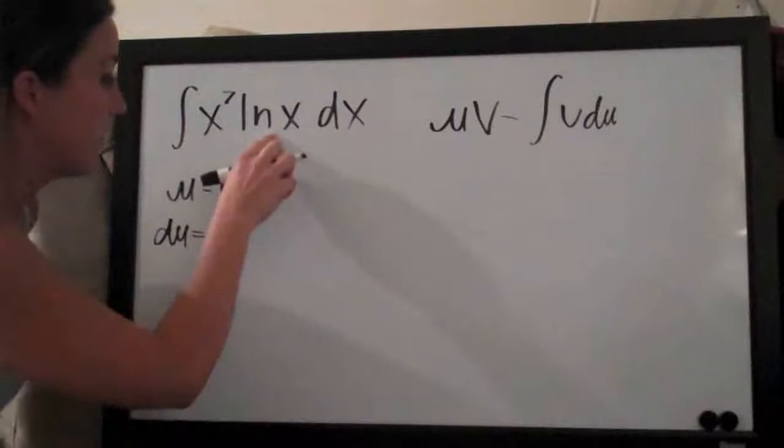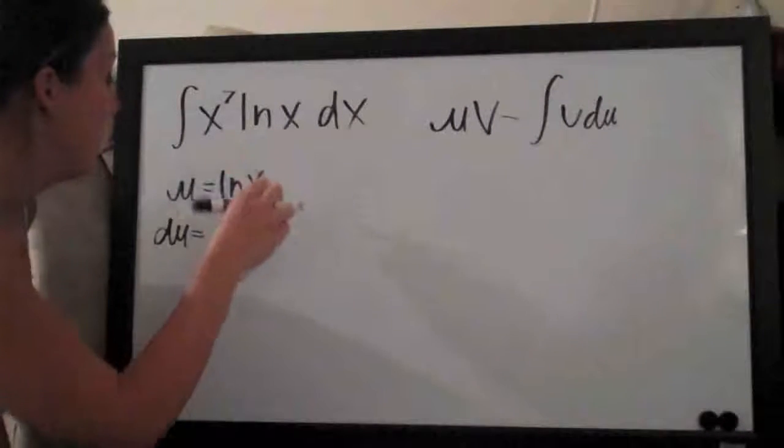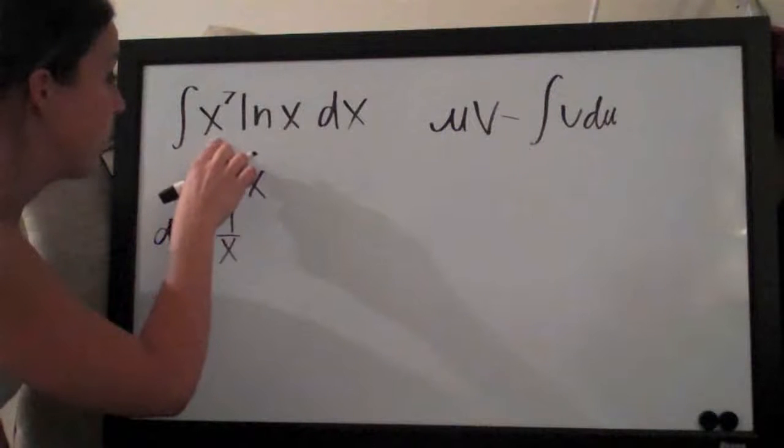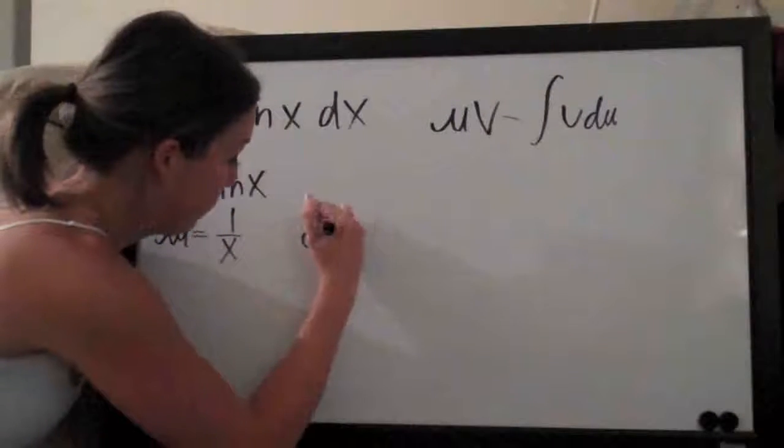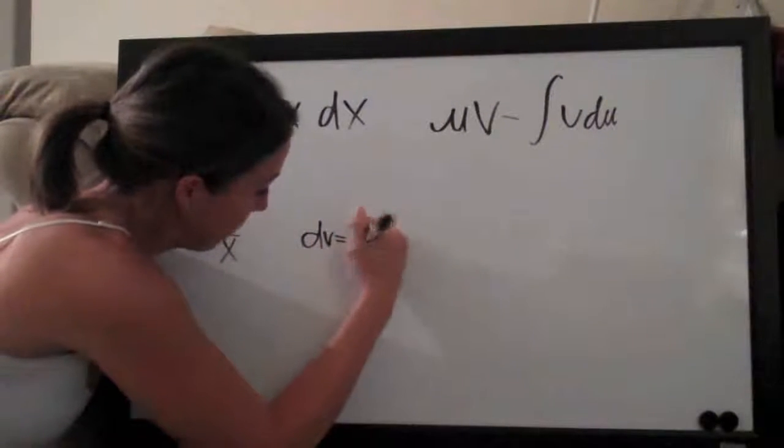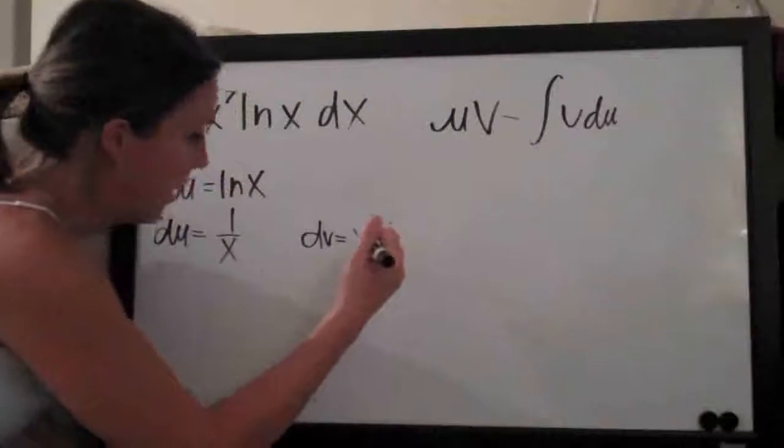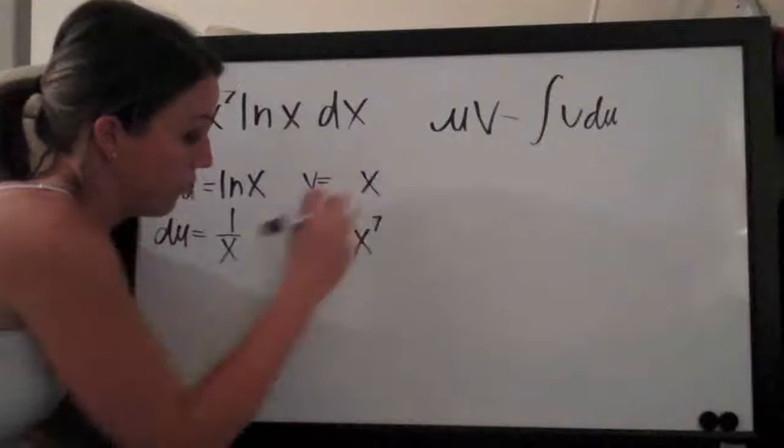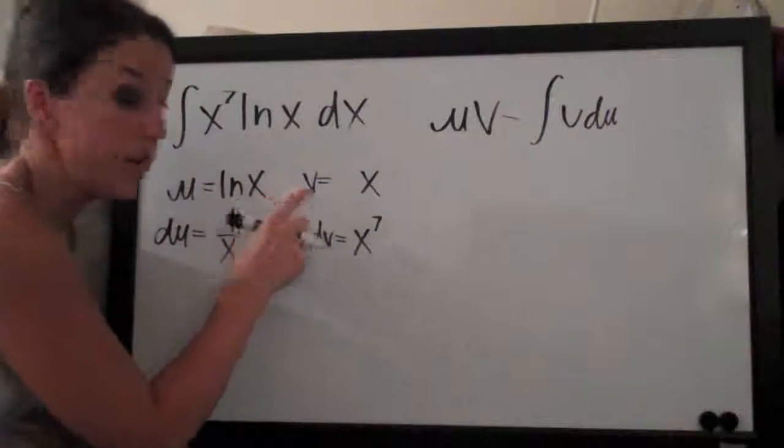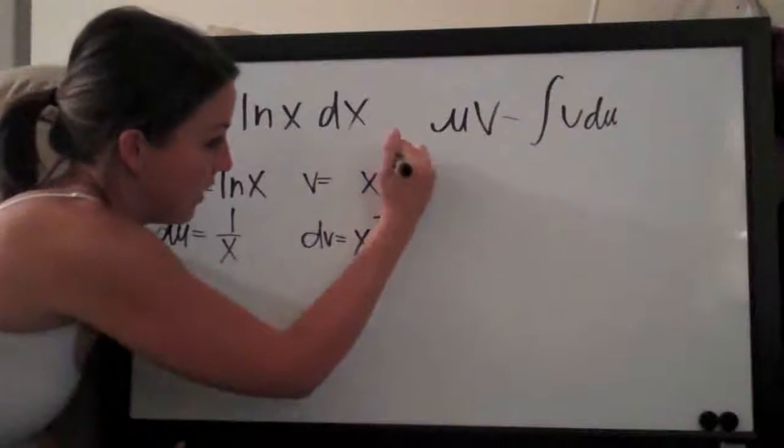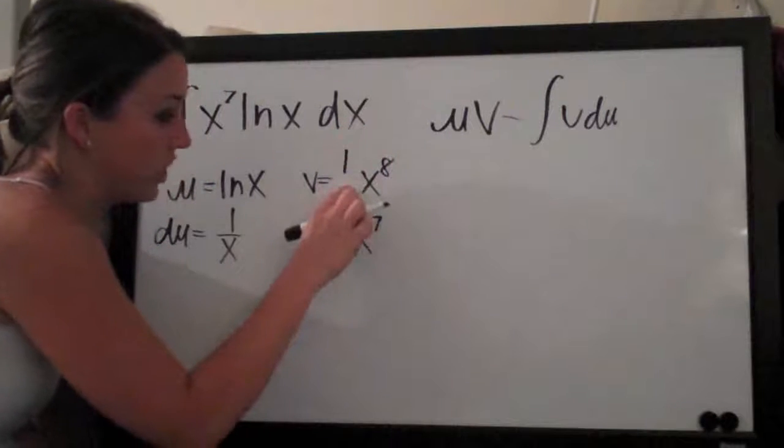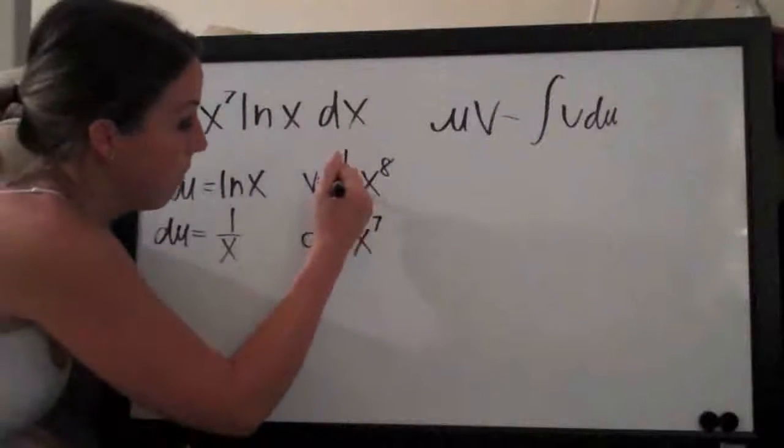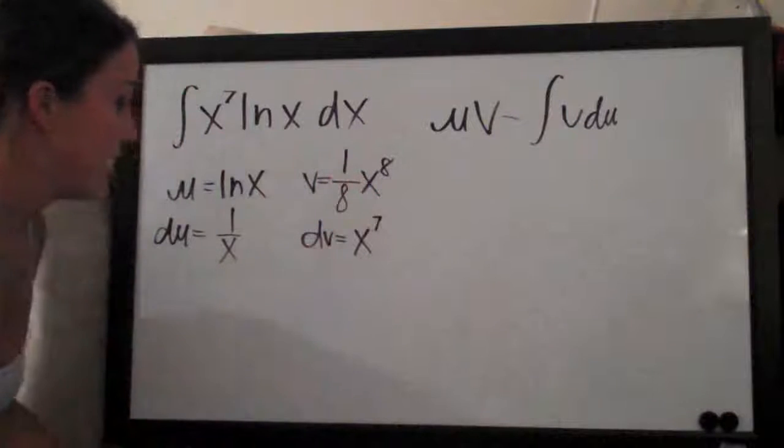Because we assigned ln of x to u, that means that dv must be x to the seventh. So we'll add one to the exponent because here we're taking the integral to get v. We add one to the exponent to get eight and then we divide the coefficient which is an implied one by the new exponent which is eight.